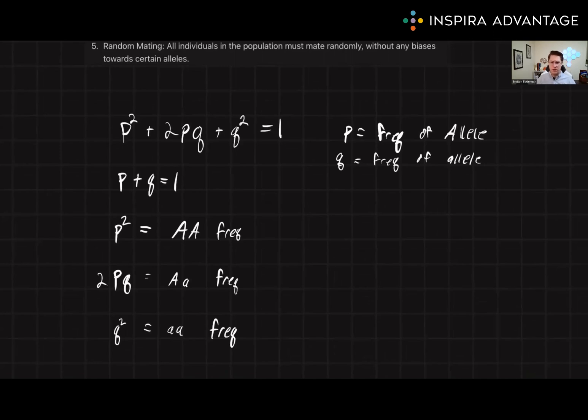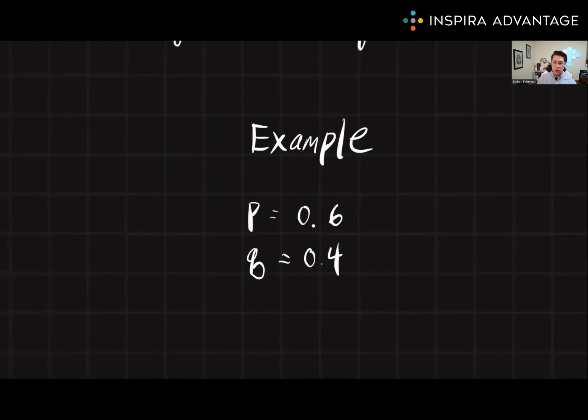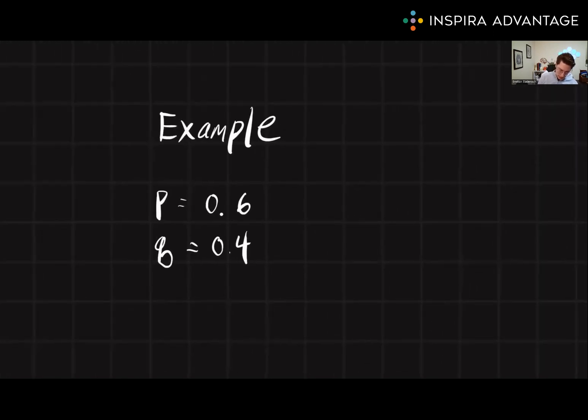Let's look at an example to understand these equations by application. Let's say a population has a frequency of the dominant allele for a certain gene of p = 0.6, and the frequency of the recessive allele is q = 0.4. Using the Hardy-Weinberg equations, we can then calculate the genotype in this population. So if we say p², and then that's just 0.6 times 0.6, this is the same as 0.36.